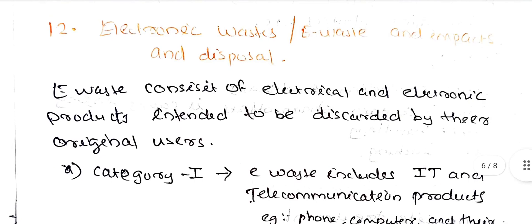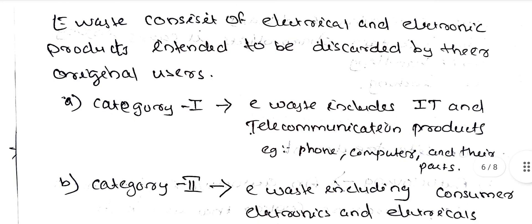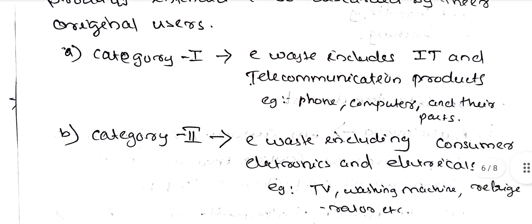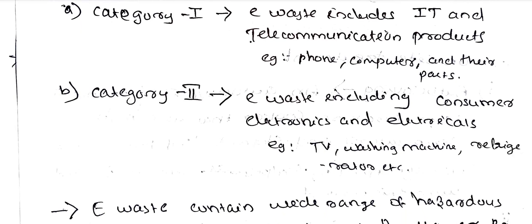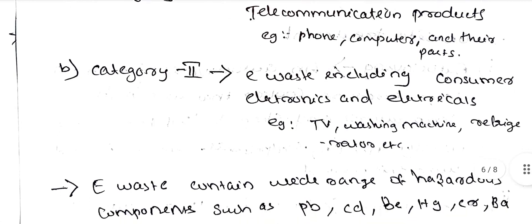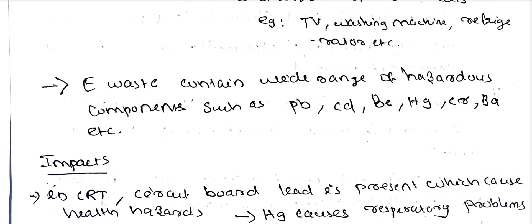Next: electronic wastes or e-waste. Electronic waste consists of electrical and electronic products intended to be discarded by the original users. E-waste includes IT and telecommunication products (category one) and consumer electronics and electricals such as TVs, washing machines, refrigerators, etc. (category two). E-waste contains hazardous components such as lead, cadmium, beryllium, mercury, chromium, barium, etc.